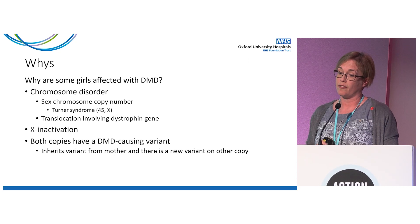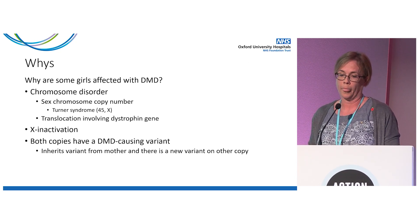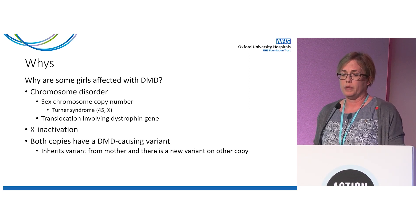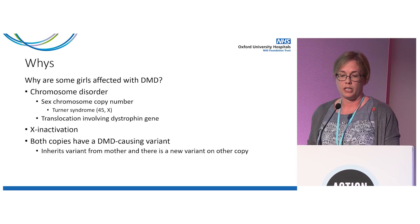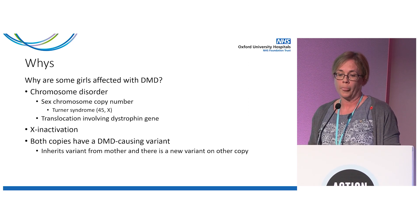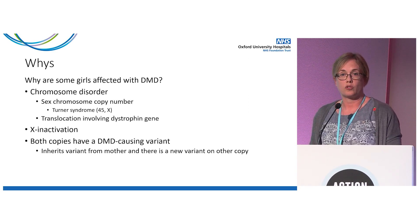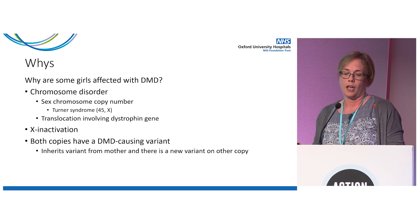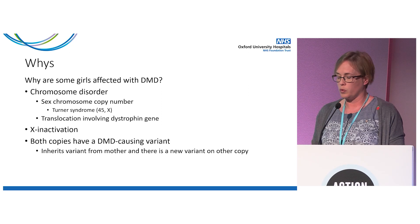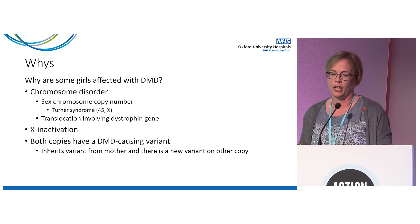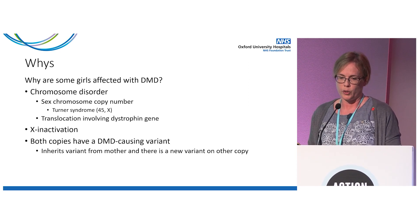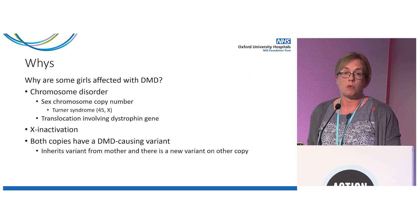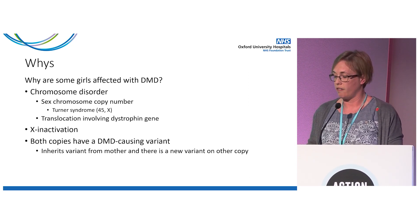It predominantly affects males, but why are some girls affected with Duchenne? There are several reasons. It could be down to a chromosome disorder — for example, in Turner syndrome, people only have 45 chromosomes with one X chromosome, and if that X chromosome had a Duchenne variant, the person would be affected. It may be a translocation — a swapping of part of the X chromosome with one of the autosomes — or it may be due to X inactivation, or that both copies of the X chromosome have a DMD-causing variant.